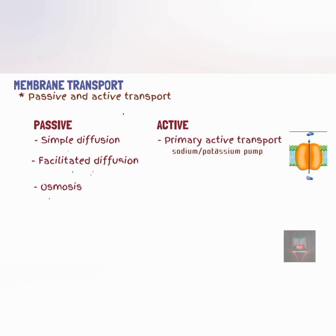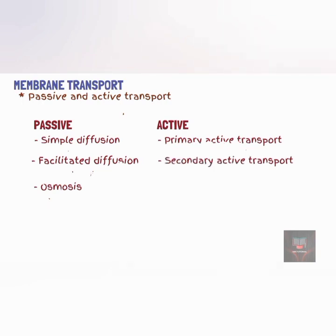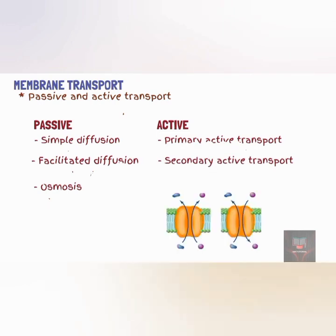In secondary active transport, a carrier protein simultaneously binds to two substances and transports them at the same time across the membrane. If these transporters move the two substances in the same direction, they are called symporters; if they move them in opposite directions, they are called antiporters.